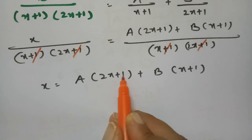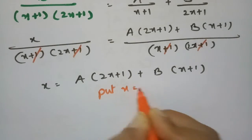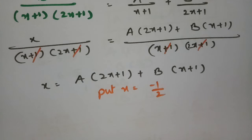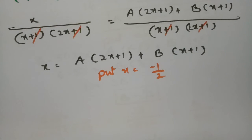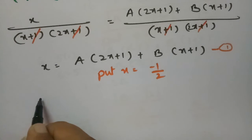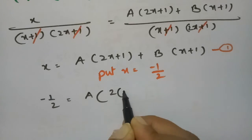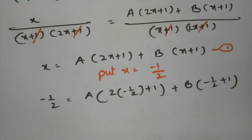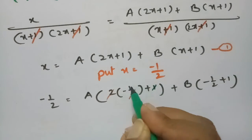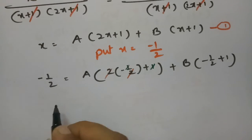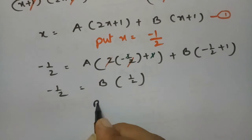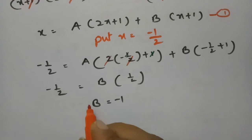To find B, I make the A term zero. Since the factor is (2x+1), I put x = -1/2. Substituting: -1/2 = A(2(-1/2)+1) + B(-1/2+1). The A term cancels (2(-1/2)+1 = 0), leaving -1/2 = B(1/2). Cancelling the halves, B = -1.